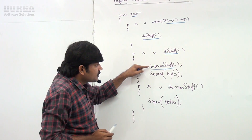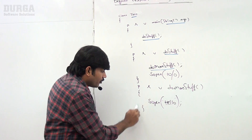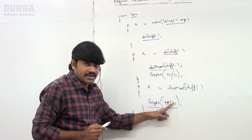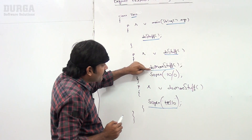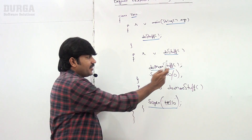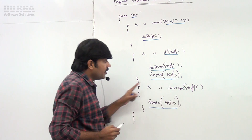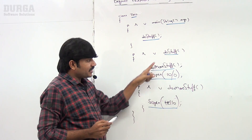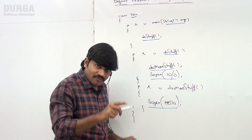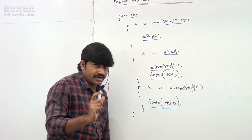Inside doMoreStuff, we have System.out.println of 'hello', so hello will be printed. Now after completing doMoreStuff, control returns to doStuff. Inside doStuff we are trying to execute System.out.println of 10 divided by 0. What is the exact output we are going to get on the console? Let's analyze.